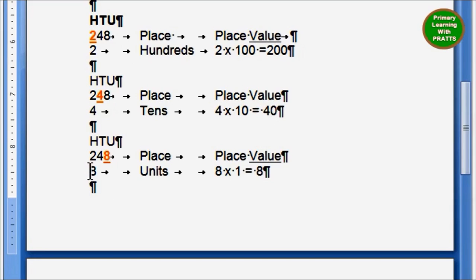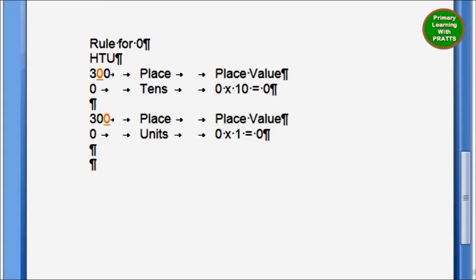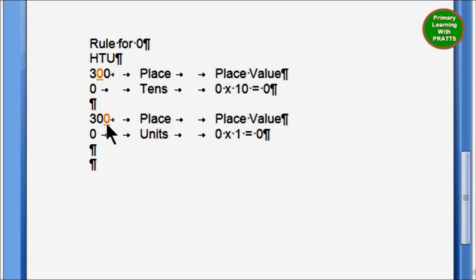For the digit 8, the place is units, and the place value is 8 into 1, which equals 8. Now we must remember the rule for 0: whenever there is a 0, whether it is under tens place or units place, you have to see which 0 is underlined. If the 0 under T is underlined, the place is tens, but the place value is 0 into 10, which equals 0. For 300, if the 0 under units is underlined, the place is units, but the place value is again 0 into 1, which equals 0. So when you have 0 under tens or units place, the place value will always be 0.